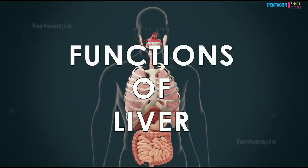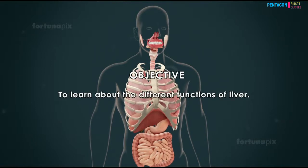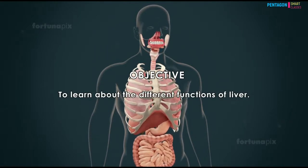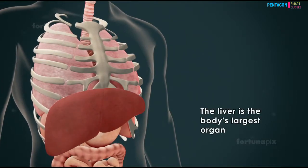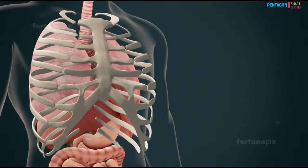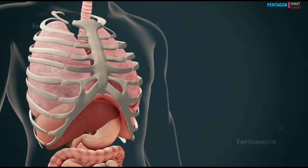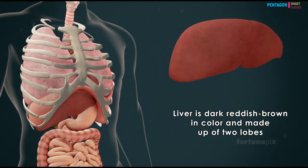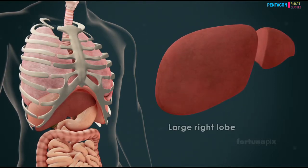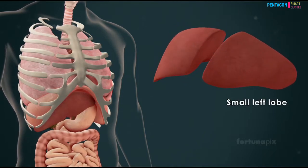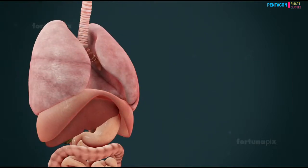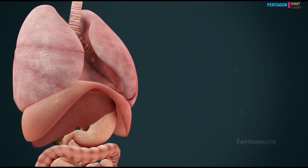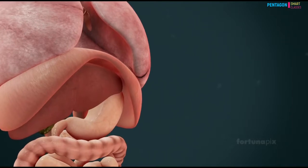Functions of the liver. Objective: to learn about the different functions of the liver. The liver is the body's largest organ, located under the ribs. It is dark reddish brown in color and made up of two lobes: a large right lobe and a small left lobe. The liver is one of the most important organs in the body, performing several tasks that are vital to life.